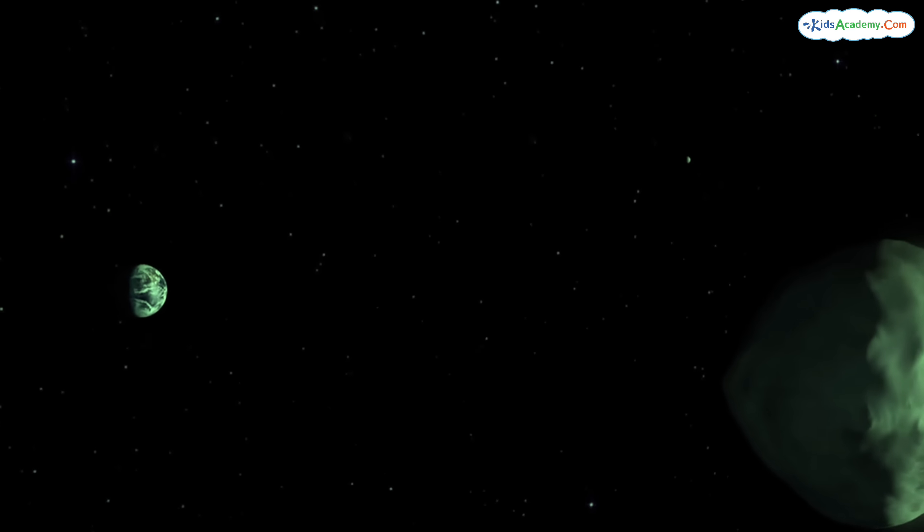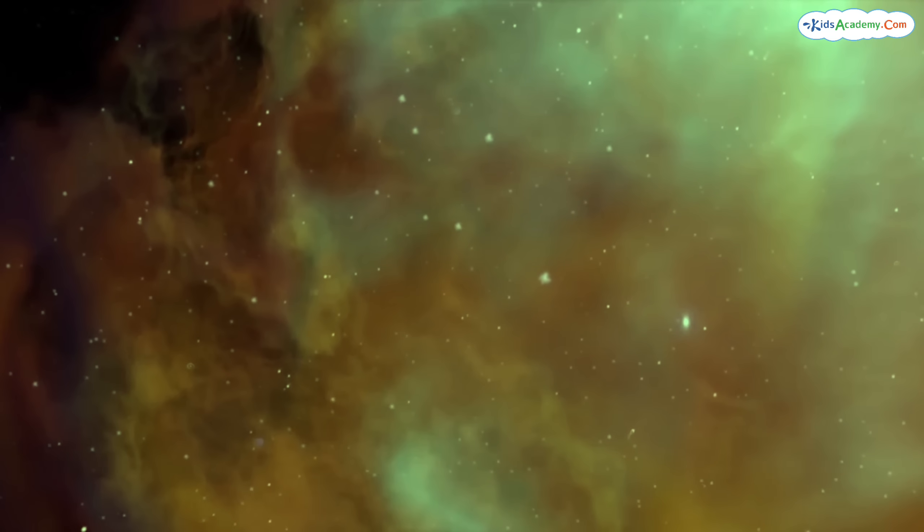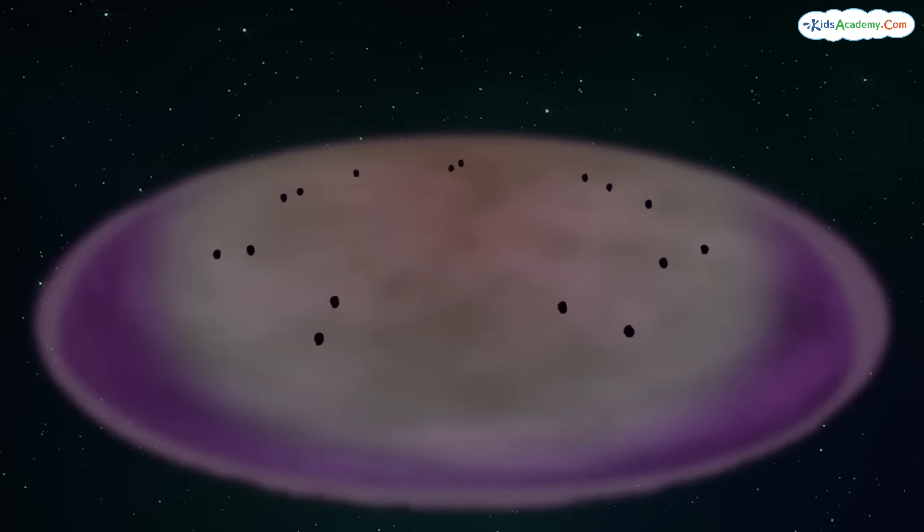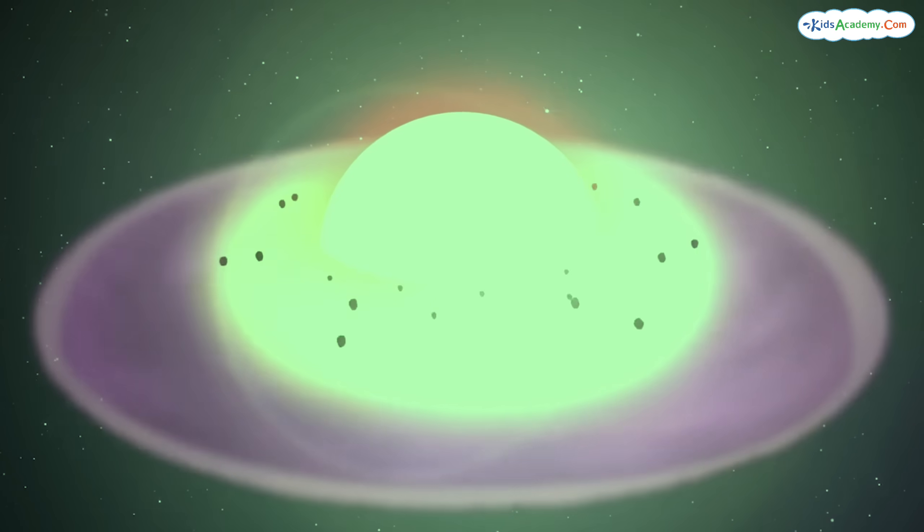Have you ever wondered, how did our solar system come to be? Well, it all started billions of years ago when a cloud of gas and dust floating in space began to collapse under its own gravity. As this cloud collapsed, it formed a spinning disk called a protoplanetary disk, with the newborn sun at its center and swirling debris around it.